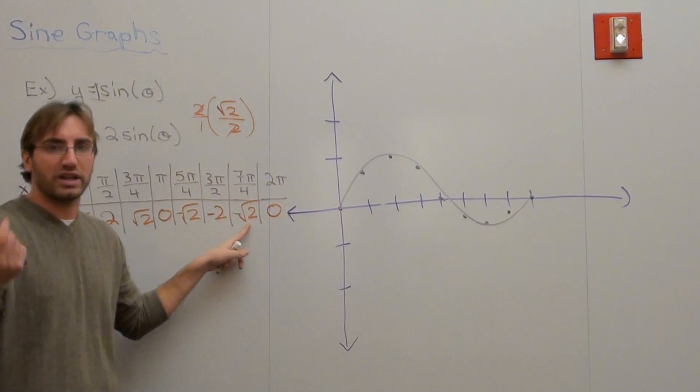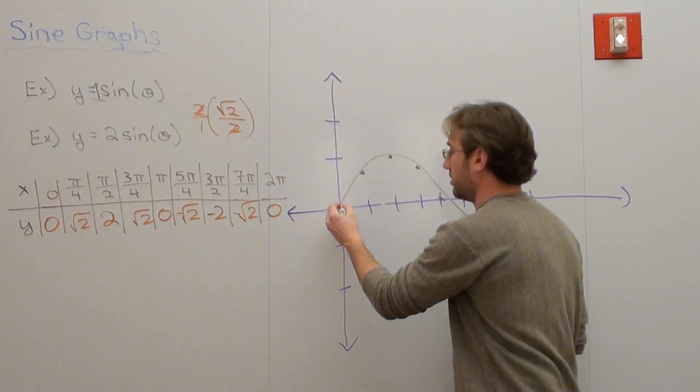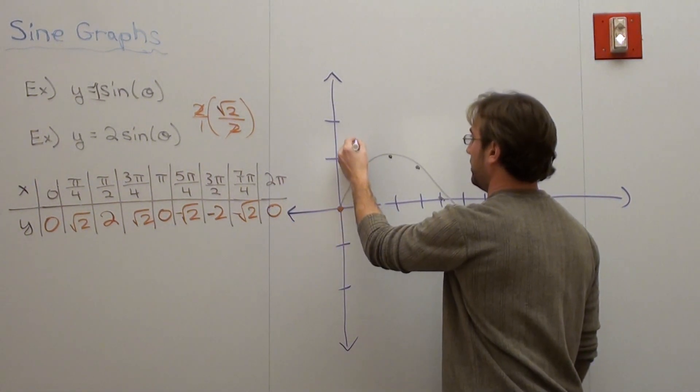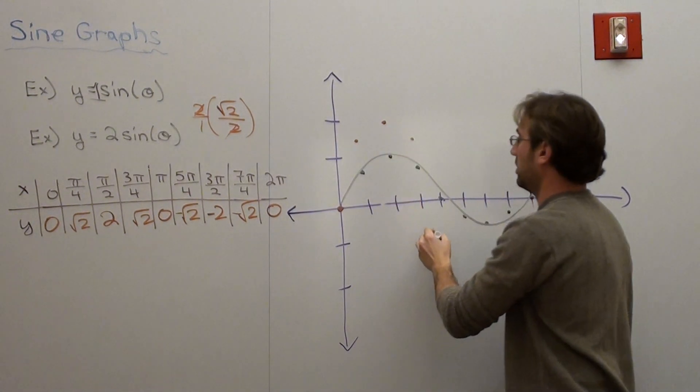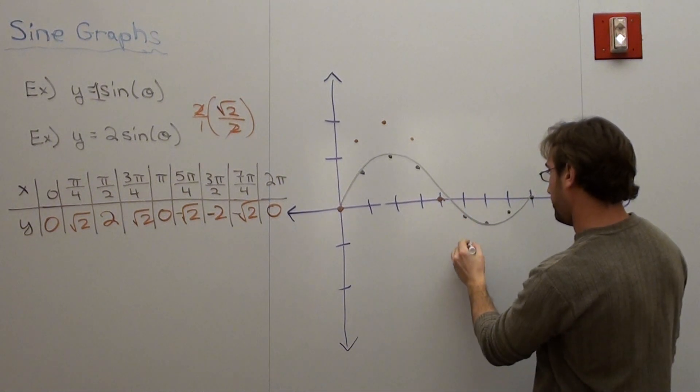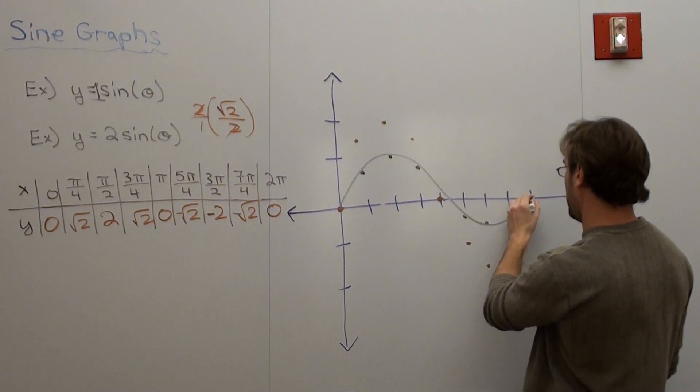I said the root 2 in a calculator is about 1.414. So let's do this. 0, 0, 1.414. It's like right there. 2, 1.414. Just got to make sure. 0, negative 1.414, negative 2, and that.